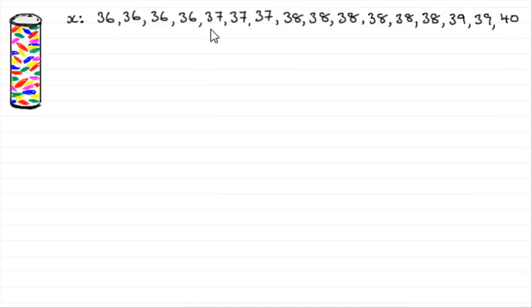We've got the actual values. These values here, these observations X, represent the number of sweets found in a tube of sweets. And 16 tubes were examined. If you were to count these up we've got 16 observations here.